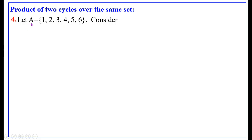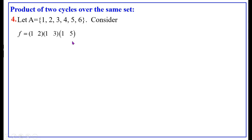Fourth point: let A equal to the set {1, 2, 3, 4, 5, 6}, that is A has 6 elements. Consider the permutation which consists of a product of 3 transpositions. Therefore it is an odd permutation because it has 3 transpositions. Whenever the number of transpositions is odd, it is called an odd permutation. Therefore this F is an odd permutation.